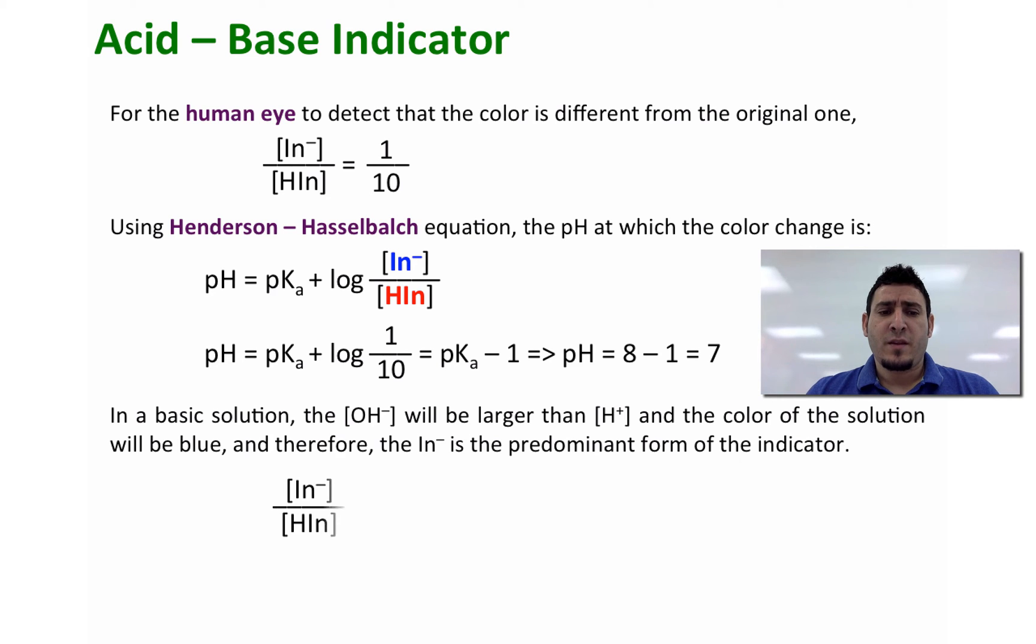Therefore, the predominant form of the indicator is going to be In⁻. Now the In⁻ over HIn for the human eye to detect it has to be 10 over 1. Again, plug this into the Henderson-Hasselbalch equation, we can find that the pH is going to be equal to 9.